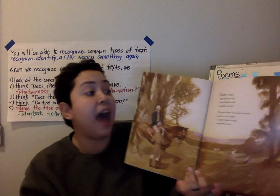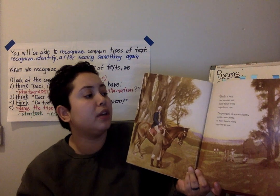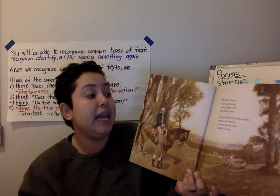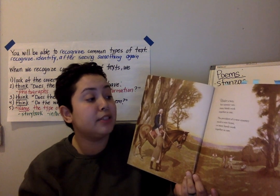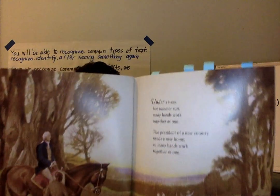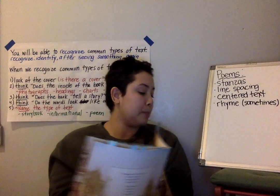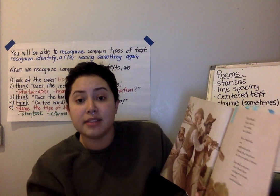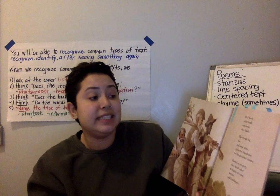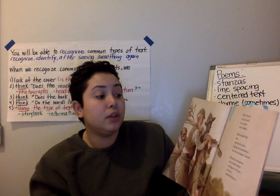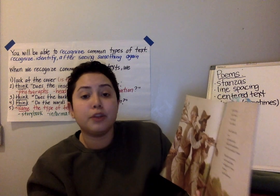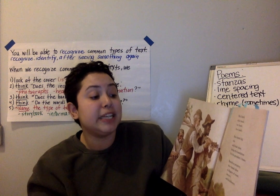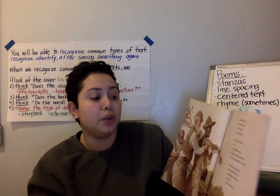Under a hazy, hot summer sun, many hands work together as one. The president of a new country needs a new home. So many hands work together as one. Black hands, white hands, free hands, slave hands. Slave hands dig, saw, and break bone, laying the foundation for the president's home. Rented as property, slave hands labor as diggers of bones, as diggers of stone, sawyers, and brick layers.